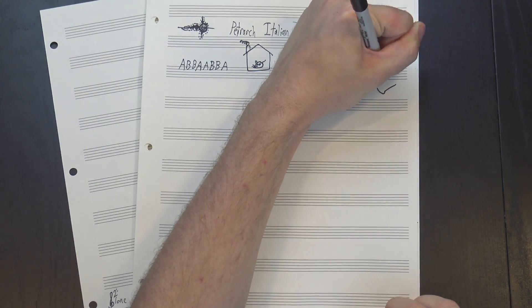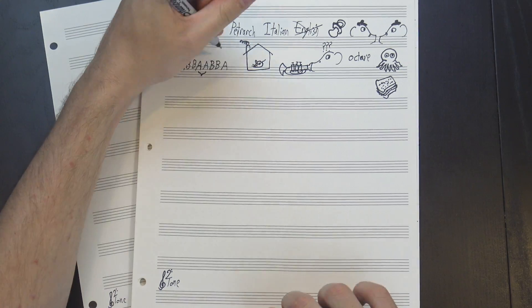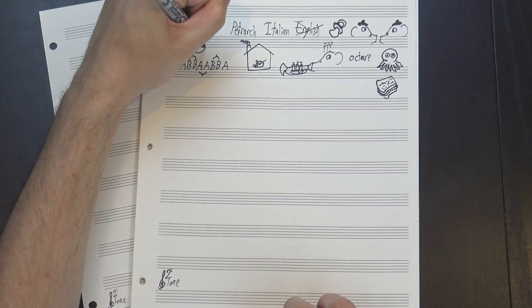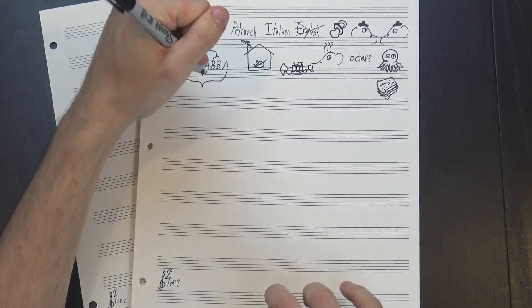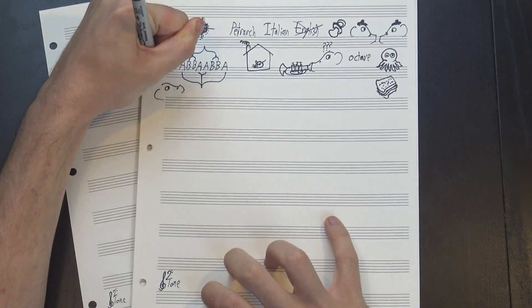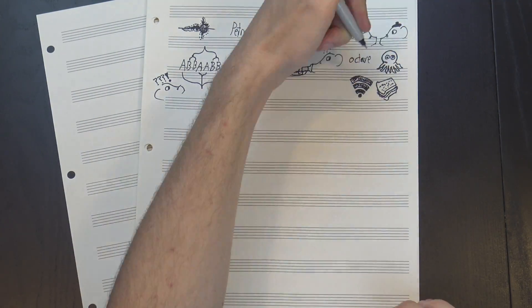In a Petrarchan sonnet, the octave always has the rhyme scheme A-B-B-A-A-B-B-A, which means it's kind of like a couplet sandwich. You've got this couplet in the middle, in between two more couplets that also rhyme with each other, all stuck in the middle of one last couplet that rhymes with our first one. If that sounds confusing, don't worry. All that matters here is that the eight lines are all connected.